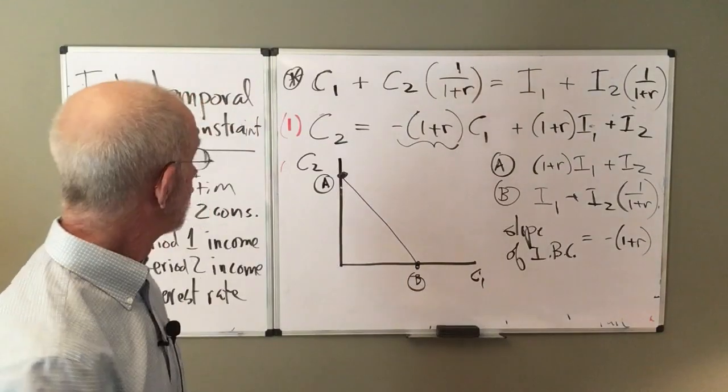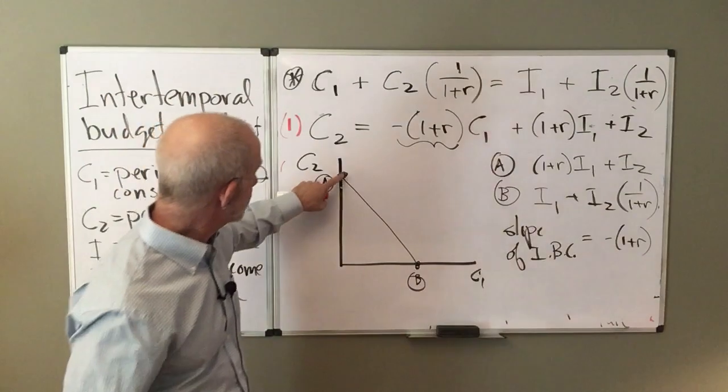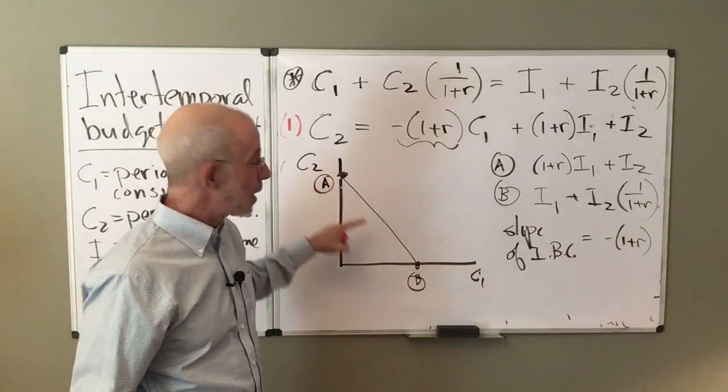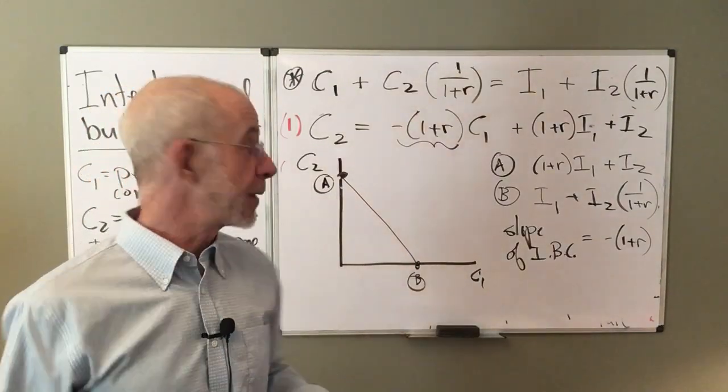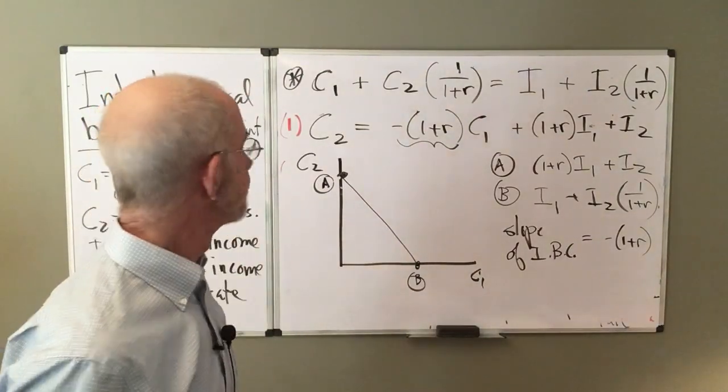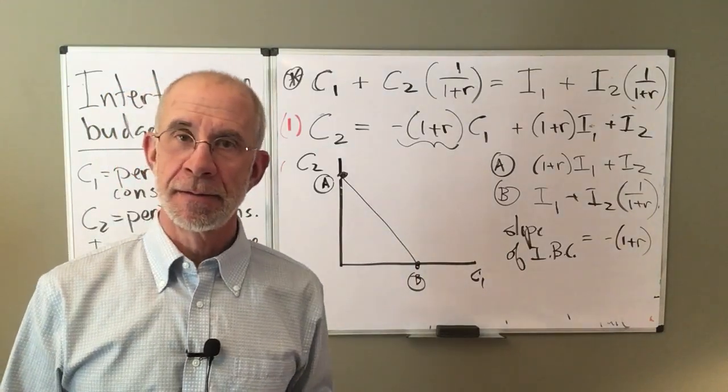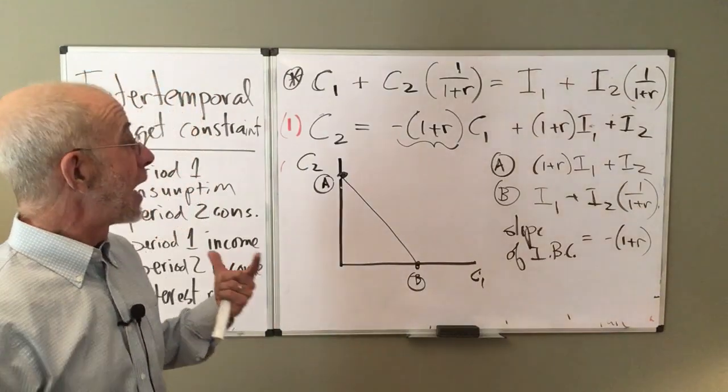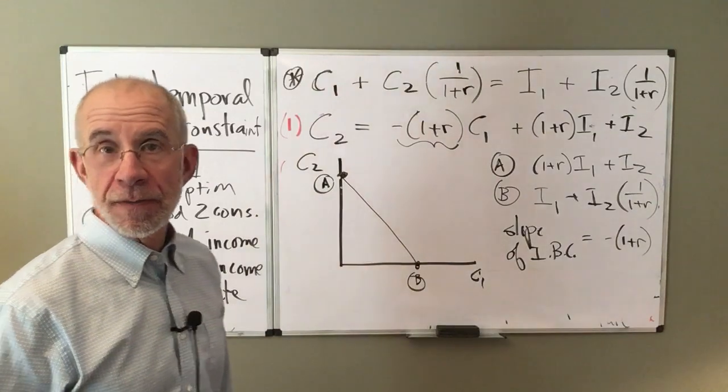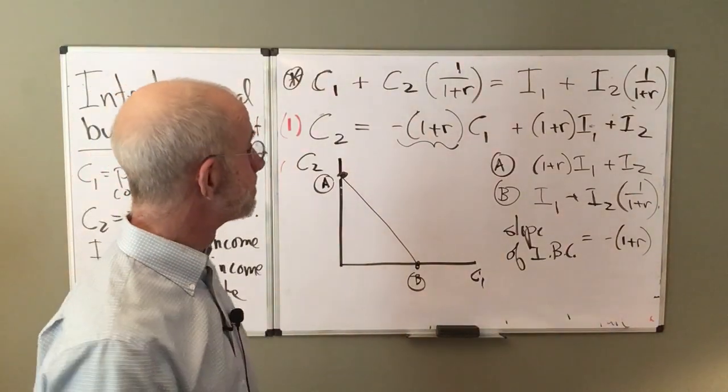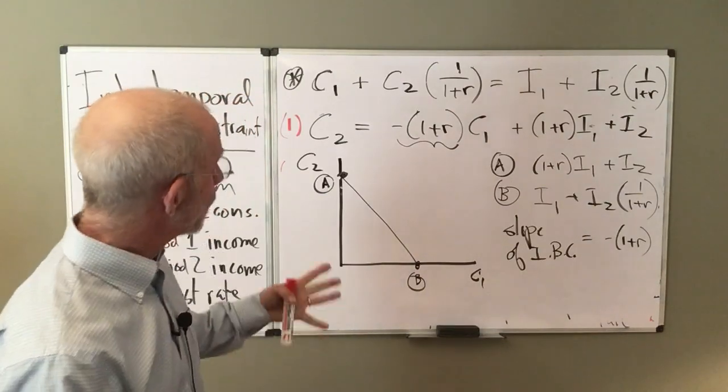Every time I give up, if I reduce consumption of C two by one, I'll be able to get more consumption in the first period. So here's this budget constraint. Now let's think about how various things would change this relationship.